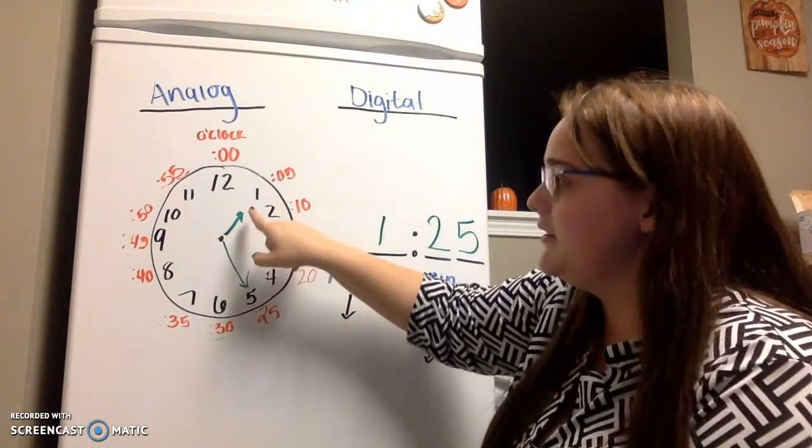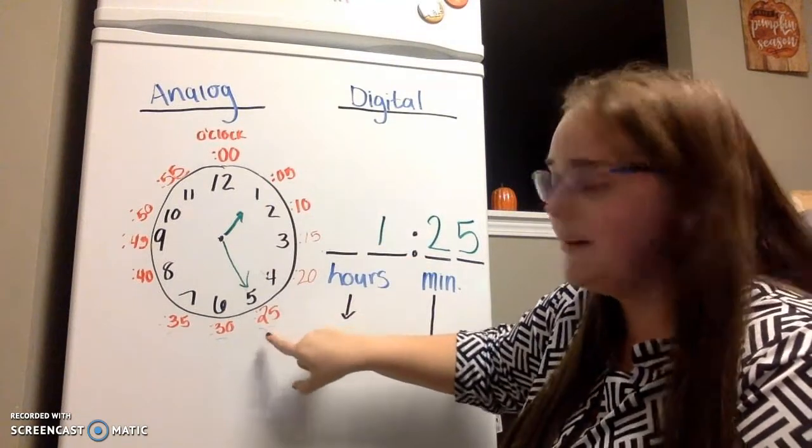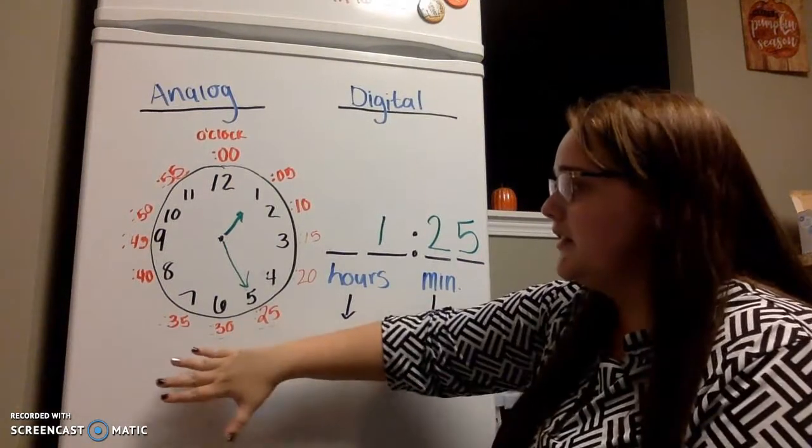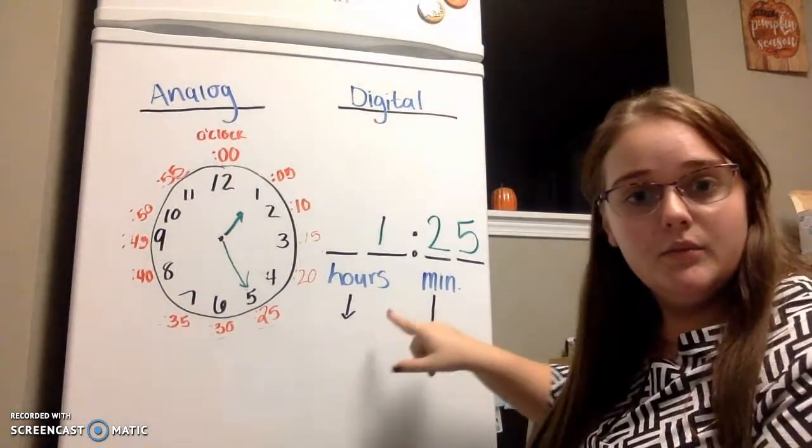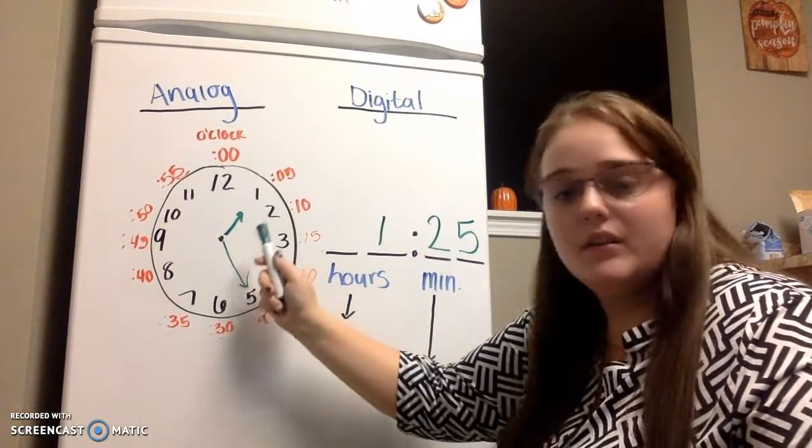I can do the same thing over here, pointing at my hour hand. 1, 25. All right. And that's how we read analog and digital out loud. And writing one from the other, and this one to that one. Great job today, guys.